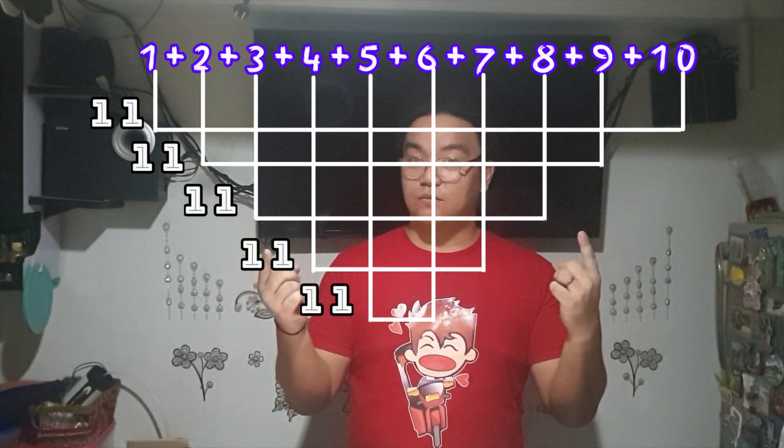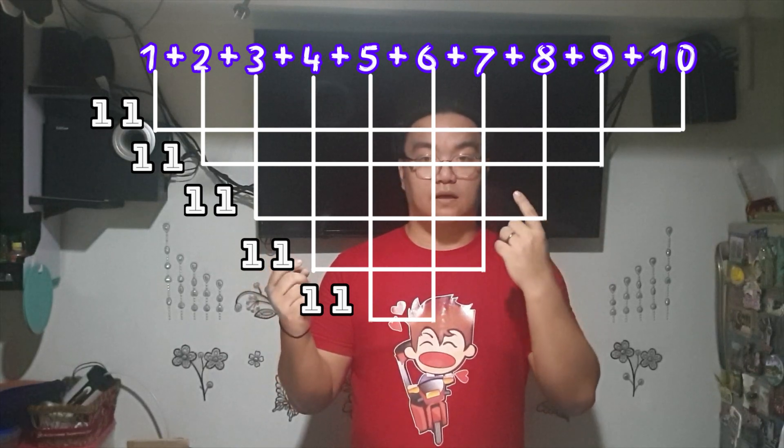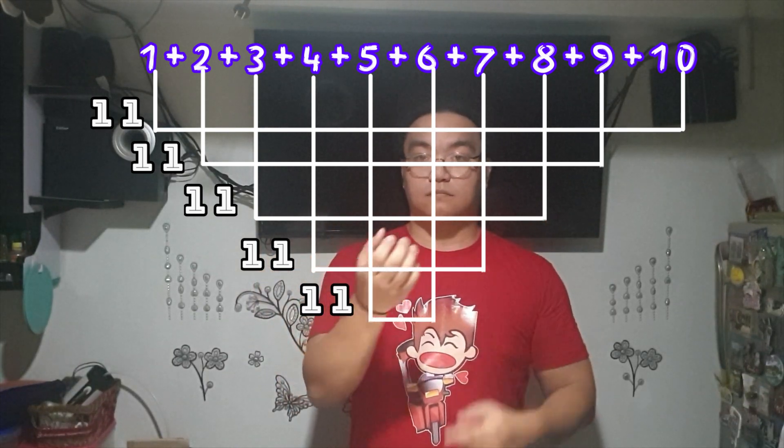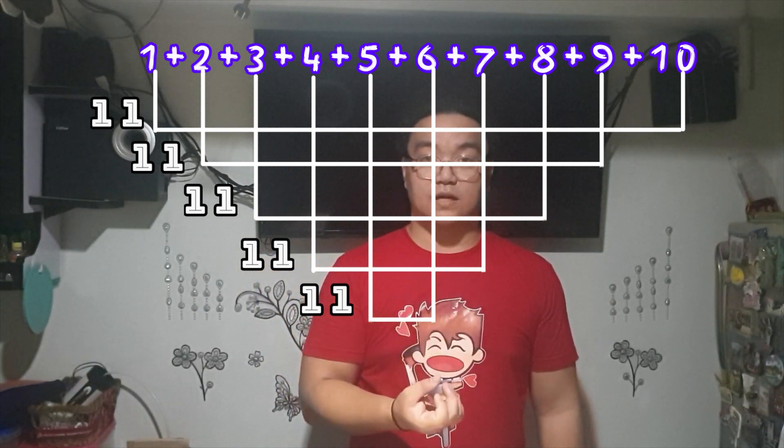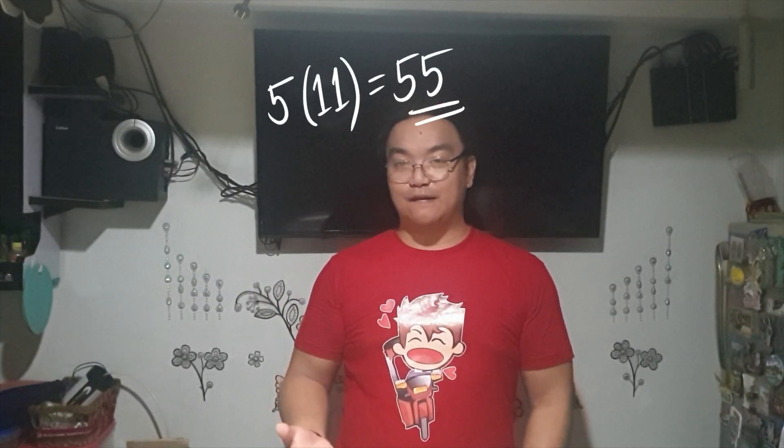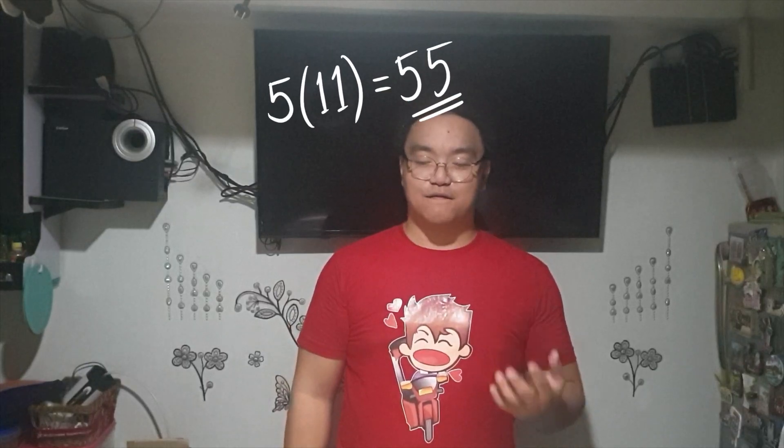So in that case, instead of adding 1 plus 2, then plus 3, then plus 4, then plus 5 until we reach plus 10, we can simply get the sum of the first 10 natural numbers by adding 10 plus 1 is equal to 11, 9 plus 2 equals to 11, 8 plus 3 equals to 11, until 5 plus 6 equals 11. And we're going to have 5 elevens. So 5 times 11 equals 55.